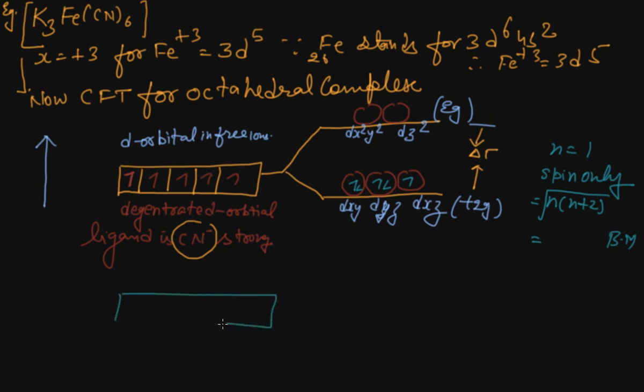If it is broken down by a weak ligand, like the example Fe(H₂O)₆Cl₃ we took yesterday in VBT, five electrons are present. This degeneracy breaks down and we get the five orbitals.